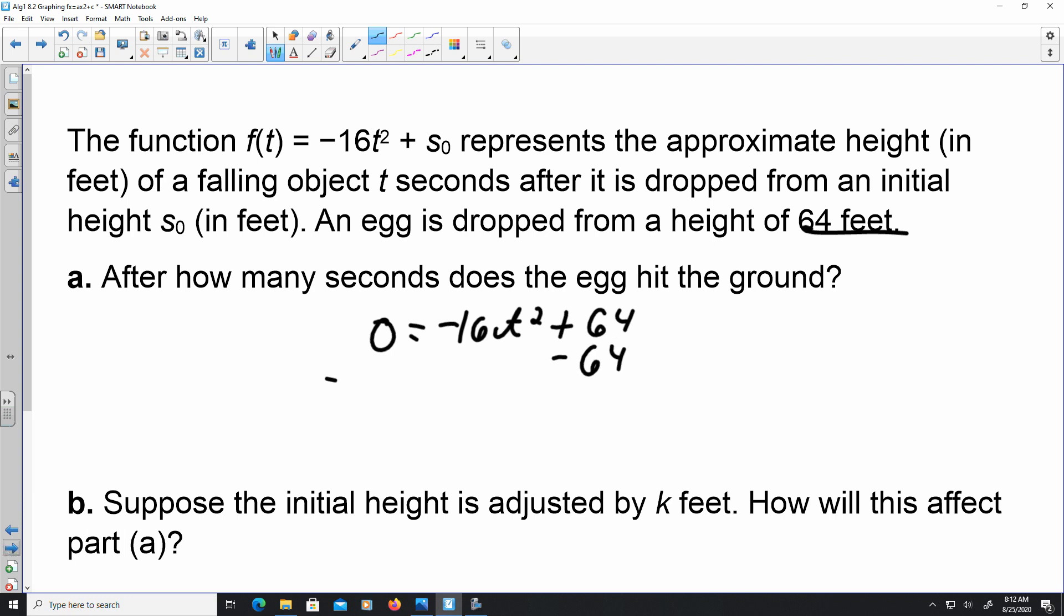So if I subtract 64 here, I have -64 = -16t². So -64 divided by -16 is 4. So I got 4 = t². Take the square root of both sides to find t. So ±2 = t. The only value in this that makes sense is the positive one. So t would equal 2. It would take 2 seconds for that egg to hit the ground from a height of 64 feet.